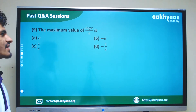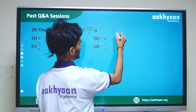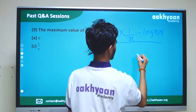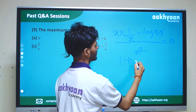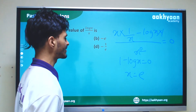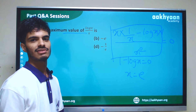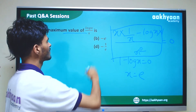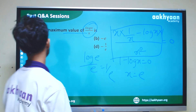In the ninth problem, we find the maximum value of log(x)/x. Setting the first derivative to zero: (1/x · x − log(x) · 1) / x² = 0, so 1 − log(x) = 0, giving x = e. After checking this is a maximum, C is the correct answer.